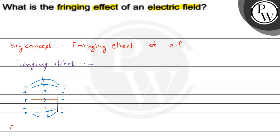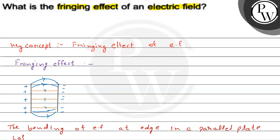The bending of electric fields at the edge in a parallel plate capacitor is known as the fringing effect.